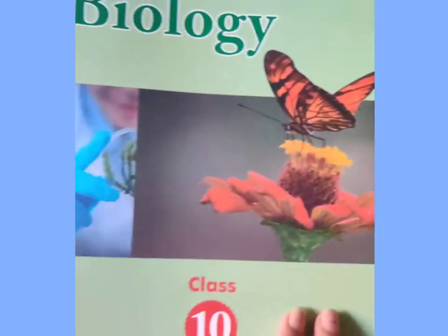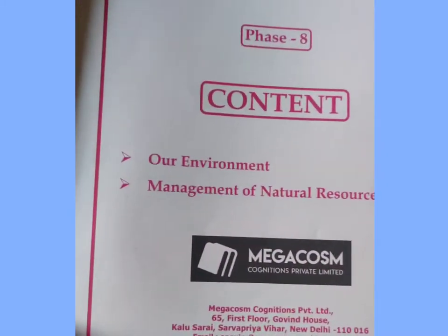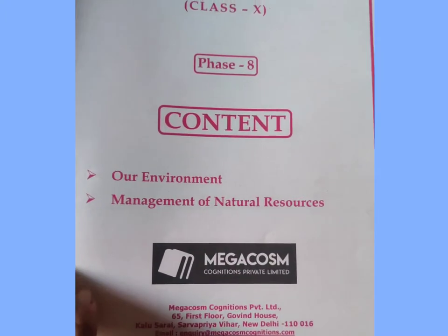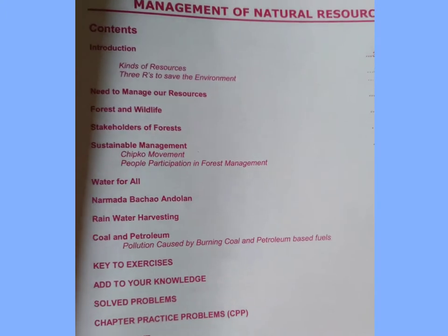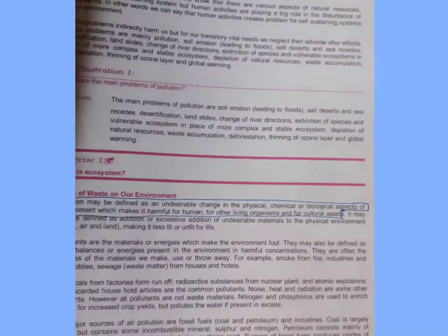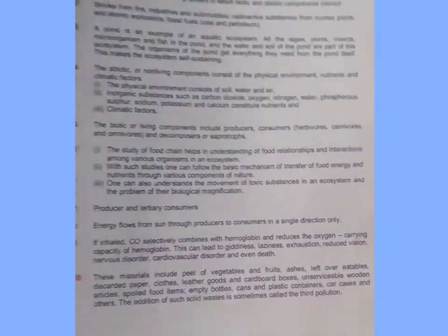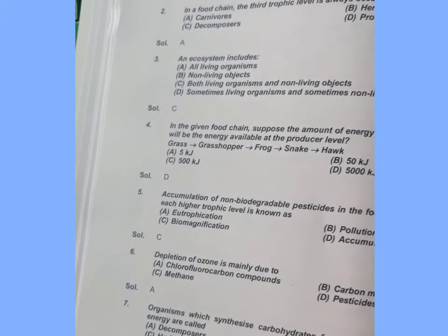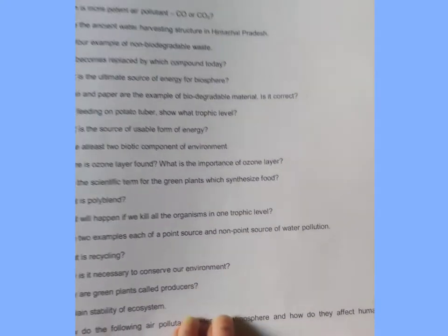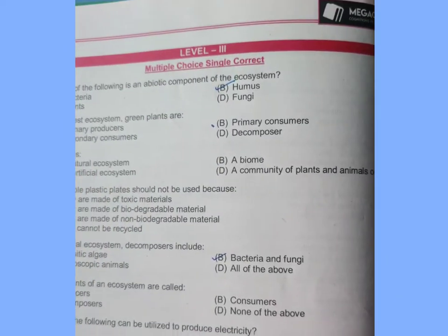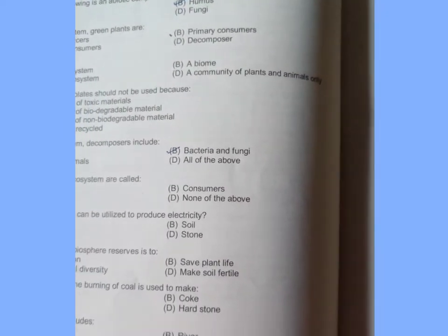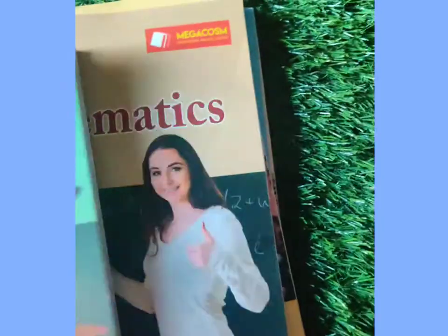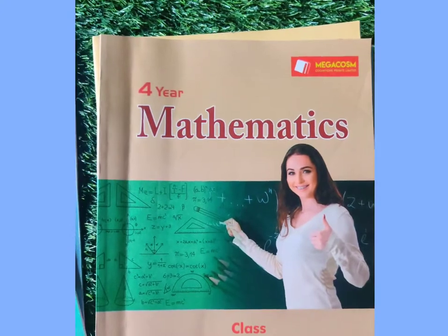Similarly in Biology, the topics are Our Environment and Management of Natural Resources. All topics of Management of Natural Resources are covered. First you have the theoretical part, then solved problems with their solutions given, then unsolved problems which you need to solve yourself. MCQs are also there, and similarly in Biology also you have Level 1, 2, and Level 3. The difficulty level increases up to Level 3, and answers are provided for all.